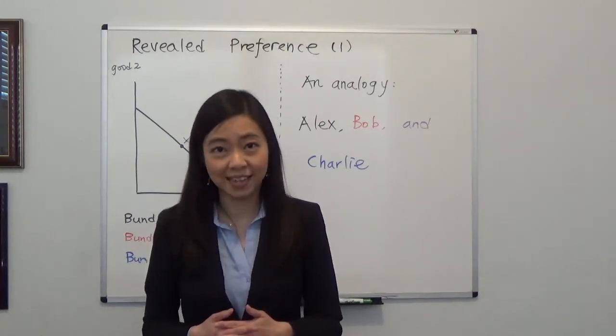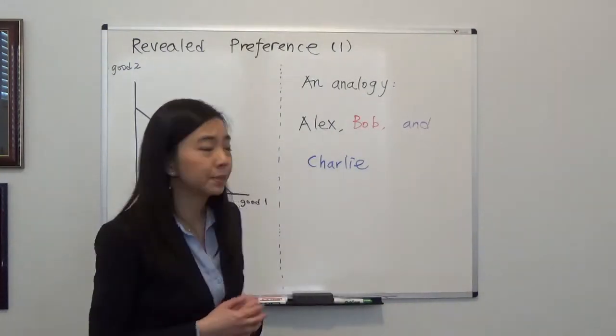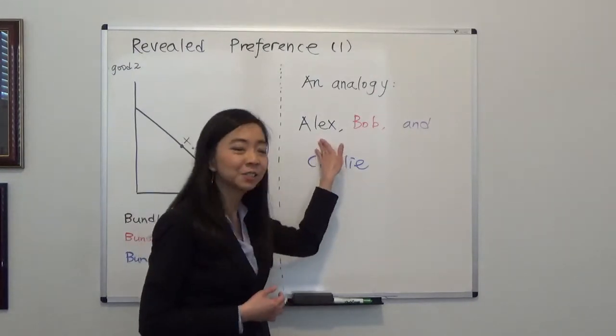Now suppose you end up going out with Alex. Then an economist will say that you prefer Alex to Bob.